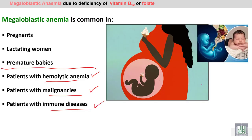Megaloblastic anemia is common in pregnancy, in lactating women, and in premature babies, all of which require more B12 and folic acid in order to support growth.